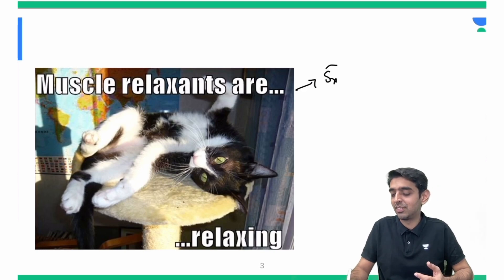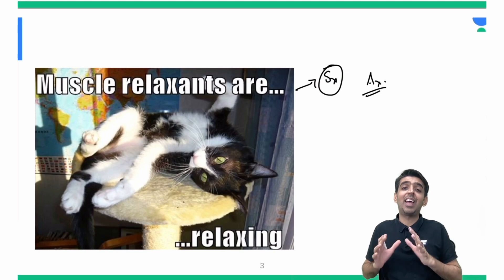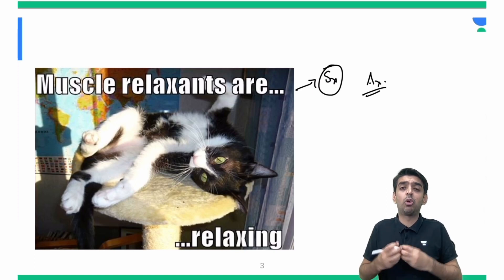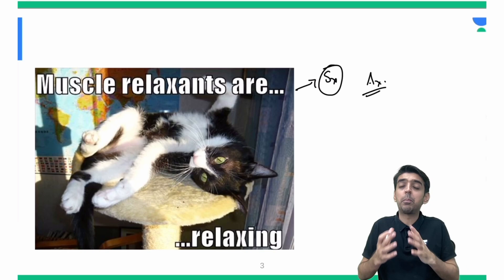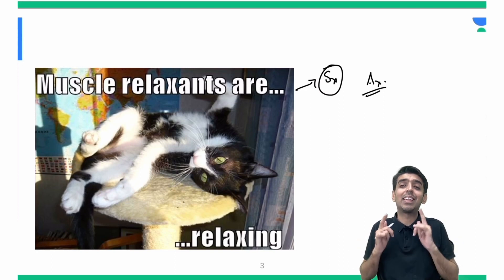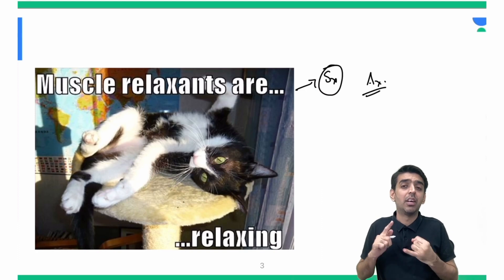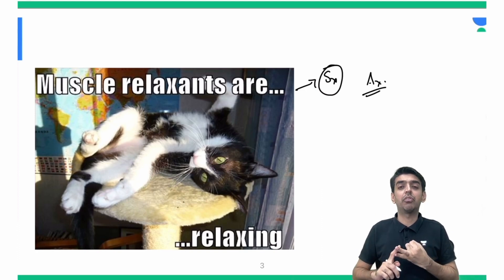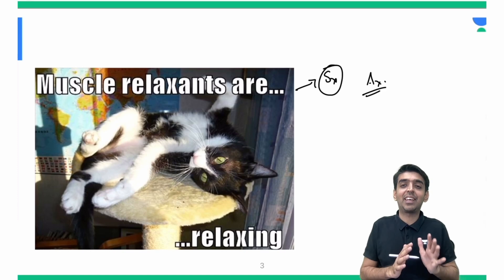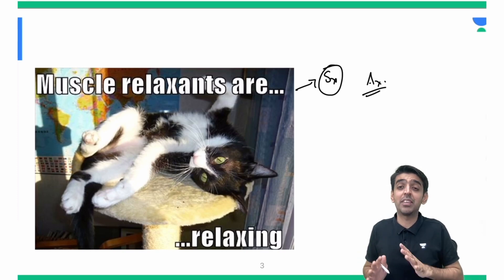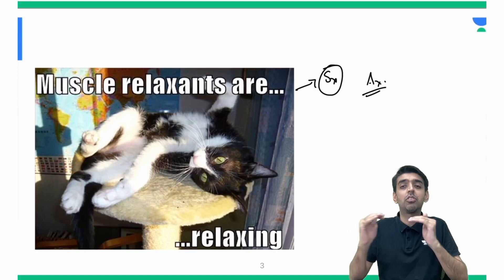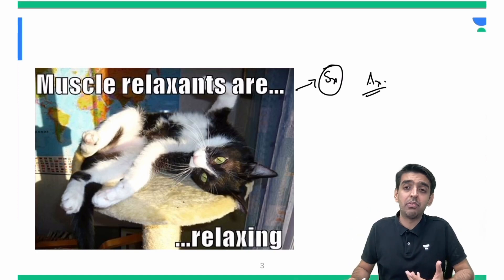Neuromuscular blockers are very relaxing for the surgeons, but for the anesthesiologist they are a class of drugs where we have to be on our toes. When we give neuromuscular blockers, the patient's ability to breathe and perform any skeletal muscle activity goes off. You become the person on whom everything depends — from ventilation of the patient to bringing the patient back to voluntary self-efforts of ventilation.